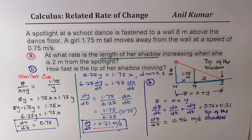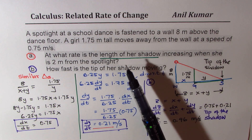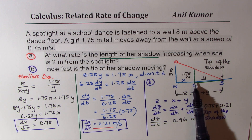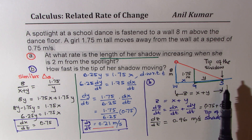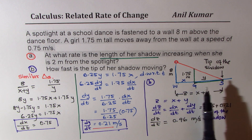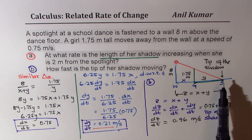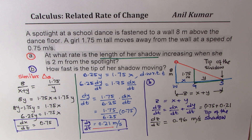With this example, I hope you understand and appreciate the difference between the two statements. The length of her shadow — y — is the shadow length alone. The tip of the shadow is from the wall to the tip, and that also moves when the girl is moving. Many times in test papers, I've seen people calculating the wrong thing.